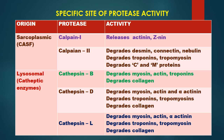The lysosomal catheptic enzymes fall into three categories. Cathepsin B degrades myosin, actin, troponin, and also collagen in the connective tissue. Cathepsin D degrades myosin, actin, alpha-actinin (connected to the Z-line and involved in actin polymerization), troponin, tropomyosin, and collagen. Cathepsin L degrades actin, myosin, and alpha-actinin, as well as troponin, tropomyosin, and collagen. These are the specific activities of the catheptic enzymes during aging.